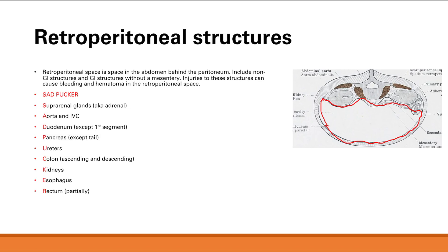SAD PUCKER includes the kidney and the adrenal gland, which sits right on top of the kidney — so suprarenal glands, right above the kidney. You also have the aorta and the inferior vena cava. The aorta would be right here, and the inferior vena cava is right next to it — both behind the peritoneum.